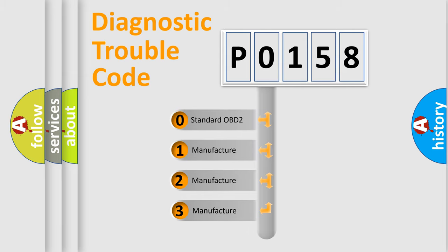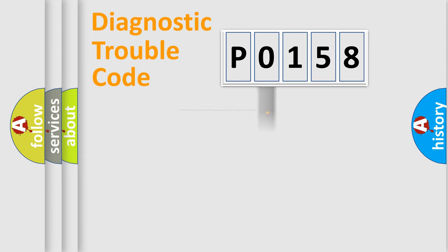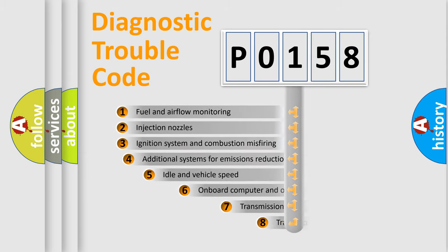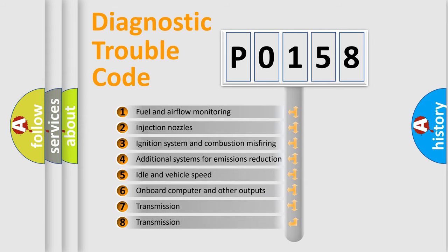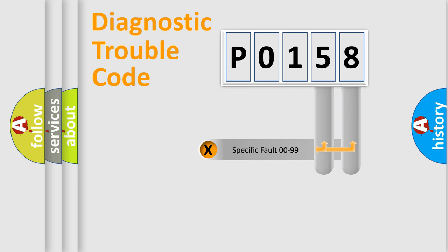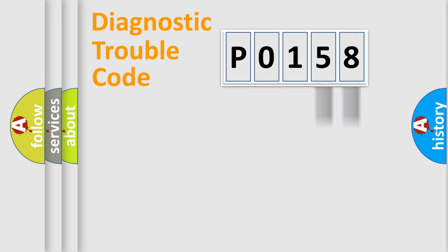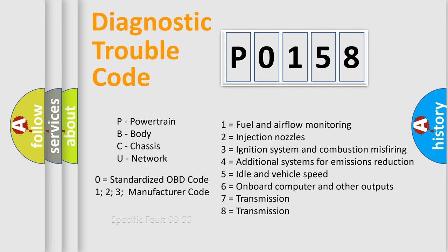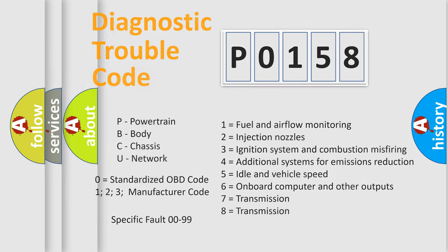If the second character is expressed as 0, it is a standardized error. In the case of numbers 1, 2, or 3, it is a more specific expression of a car-specific error. The third character specifies a subset of errors. This distribution is valid only for the standardized DTC code, and only the last two characters define the specific fault of the group — but only when the second character is 0.